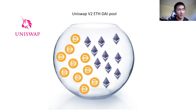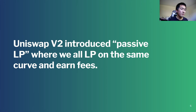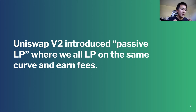With V2, when you're providing liquidity, you just have to provide the same amount of both asset pairs, like 5k ETH and 5k DAI, and provide liquidity on Uniswap V2. Another way to think about this is that when you provide liquidity on V2, liquidity is evenly distributed on the curve.